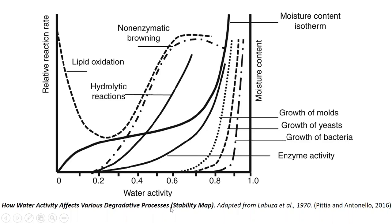Drying, concentrating by boiling, and adding salt or sugar can decrease water activity. As seen in the classical graph of how water activity affects various degradative processes, the action of microorganisms on food increases with increasing water activity. This was adapted by Pita and Anteleno, taken from Labuza in the 1970s. Chemical and enzymatic spoilage reactions may also occur at moderate to high water activity.